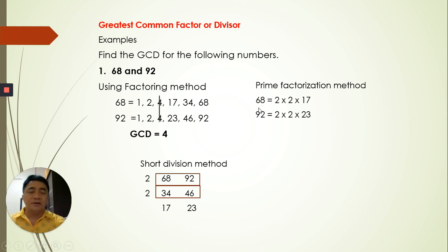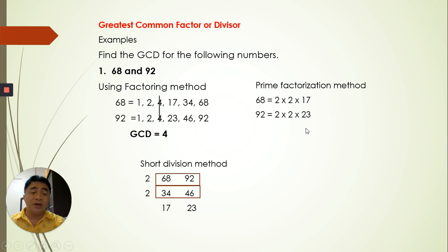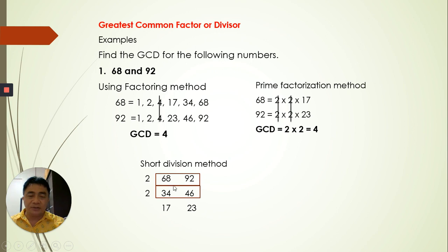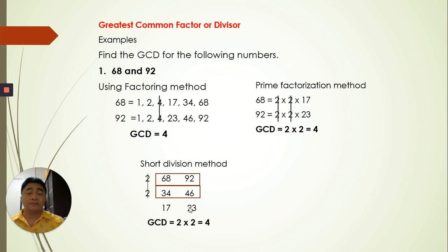For the prime factorization method on 68: 2 times 2 is 4, times 17 is 68 — all prime numbers. For 92: 2 times 2 is 4, times 23 is 92. We pair the common primes: one pair of 2s, another pair of 2s, and no more. So the GCD is 2 times 2 equals 4. For short division: divide 68 and 92 by 2 to get 34 and 46, divide again by 2 to get 17 and 23 — both prime. So the GCD is 4.